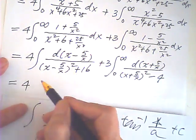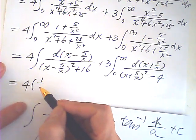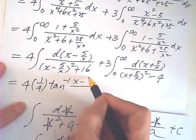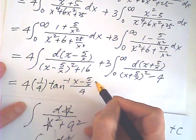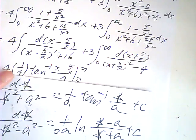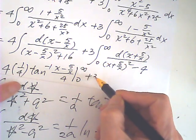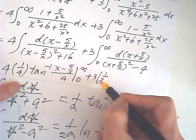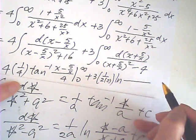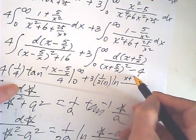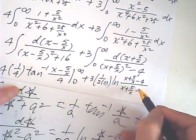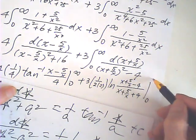So, I can use these two formulas for these two results. This one will be equal to 4, and 1 over 4, arctangent, x minus 5 over x divided by 4, from 0 to infinity. That one, using this formula, is equal to 3 over 2 times 2, natural log x plus 5 over x minus 4 over x plus 5 over x plus 4, from 0 to infinity.